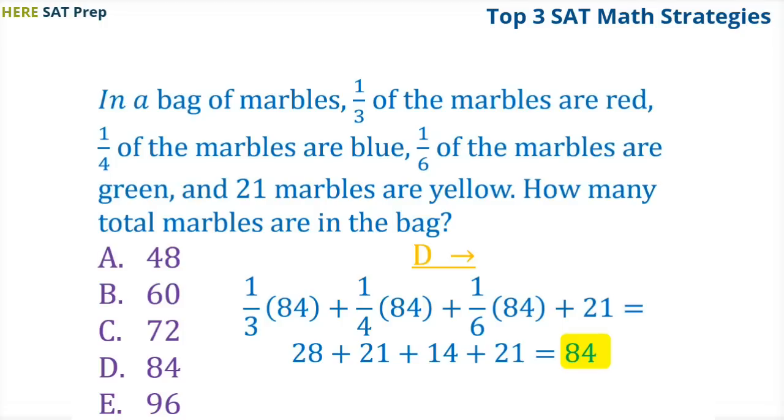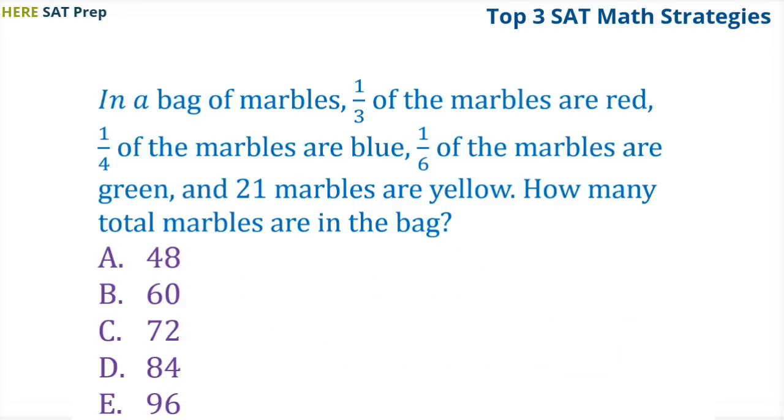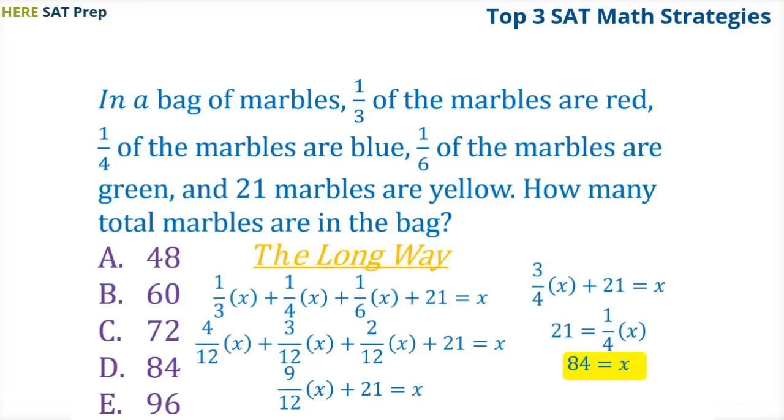As you can see, if we had started from A and moved forward, we would have needed to try three answer choices instead of just two. If we had wanted to set up and solve an equation for this question, we would have done one-third x plus one-fourth x plus one-sixth x plus twenty-one equals x. Then we would have changed the fractions to common denominators to get four over twelve x plus three over twelve x plus two over twelve x plus twenty-one equals x. Then we would have combined the like terms to get nine over twelve x plus twenty-one equals x, which simplifies to three over four x plus twenty-one equals x. Then we subtract three over four x from both sides to get twenty-one equals one over four x. And finally we multiply both sides by four to get x equals eighty-four, which is our answer, but that took a lot longer than just using the answer choices.